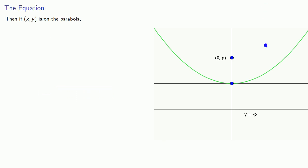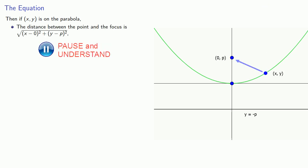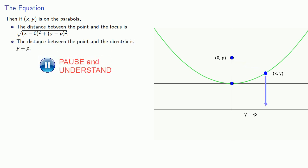So if (x, y) is a point on the parabola, the distance between the point and the focus will be... And the distance between the point and the directrix will be... And since the ratio of these two distances is equal to 1, this allows us to set up an equation.